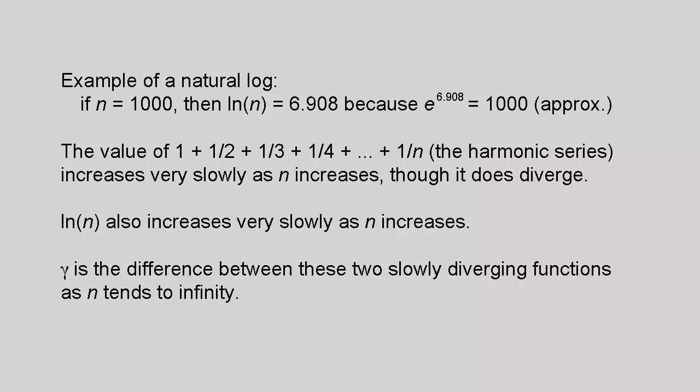The value of the series one plus one over two plus one over three plus one over four etc plus one over n, which is called the harmonic series, increases very slowly as n increases, although it does diverge, in other words grows without limit. The same is true of the natural log of n. Gamma just happens to be the difference between these two slowly diverging functions as n tends to infinity.